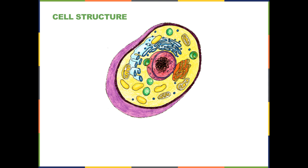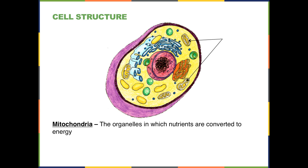The next structure is the mitochondria — mitochondria is the plural, mitochondrion is the singular. The mitochondria are the organelles that convert food or nutrients into energy. They are frequently called the 'powerhouse of the cell.'